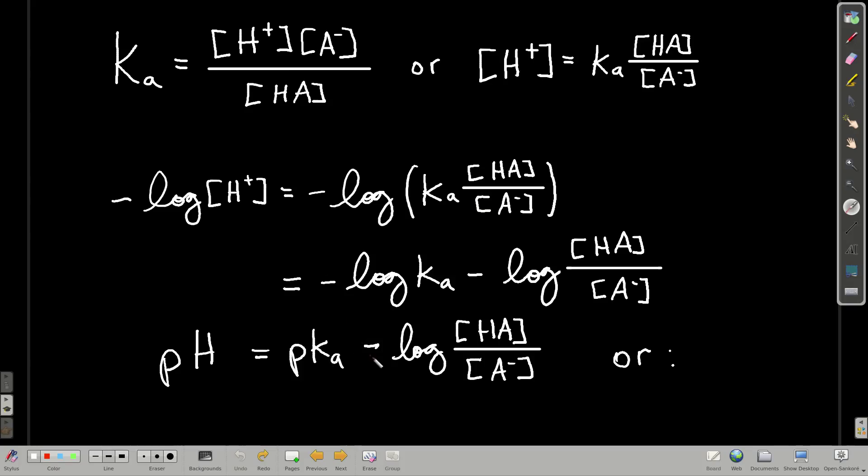To get to the Henderson-Hasselbalch equation, let's just take our Ka expression. Let's each go to this right here, hydrogen ion times conjugate base over the concentration of the weak acid. If we solve this for the concentration of hydrogen ion, just like this.